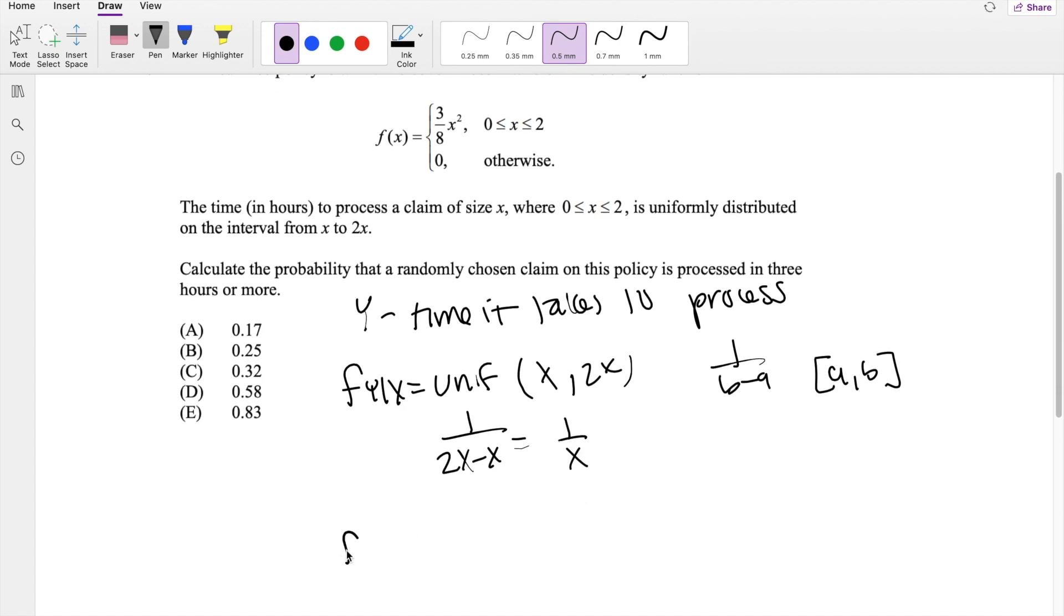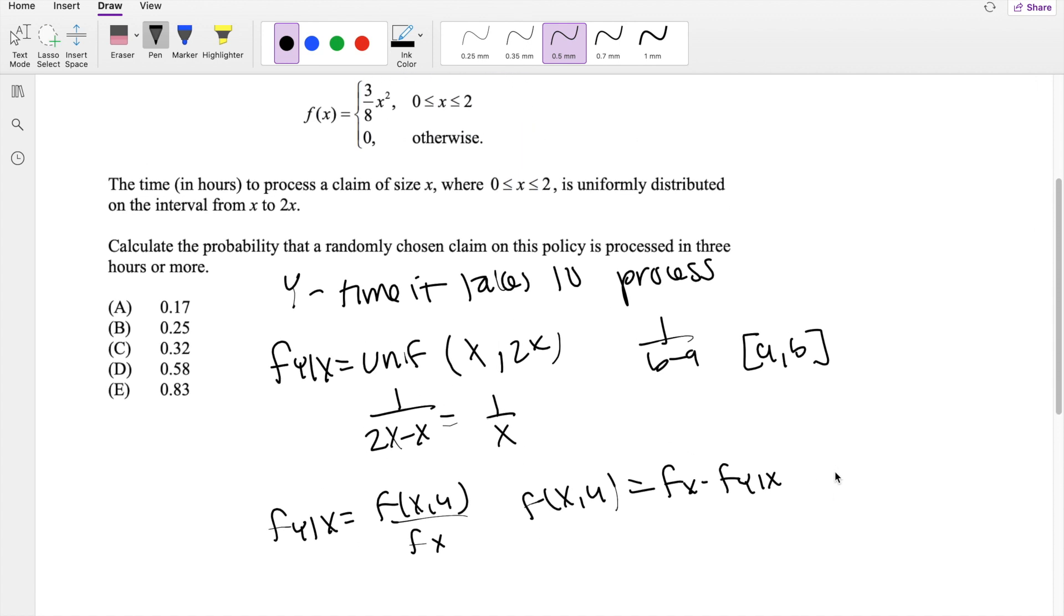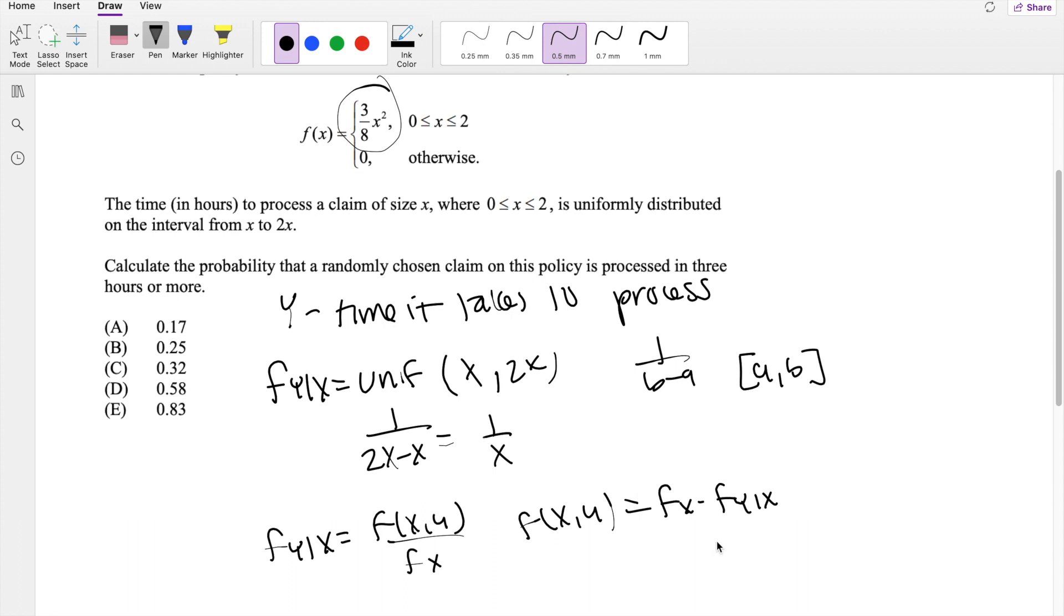And we also know that f(y|x) equals f(x,y) divided by f(x), the marginal distribution of x. So we can say that f(x,y) equals f(x) times f(y|x). And we know f(x) is equal to this thing here, so 3 over 8x squared times f(y|x) is right here, 1 over x. So that means this equals 3 over 8x.